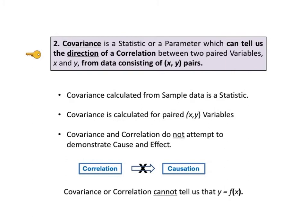Each data point consists of a value for x and a corresponding value for y. For example, x might be a person's height, and y might be that same person's weight. A statistic is a measurable property of a sample. Parameter is the term used for a measurable property of a population or process. Covariance, like the mean or standard deviation, can be either a statistic or a parameter.